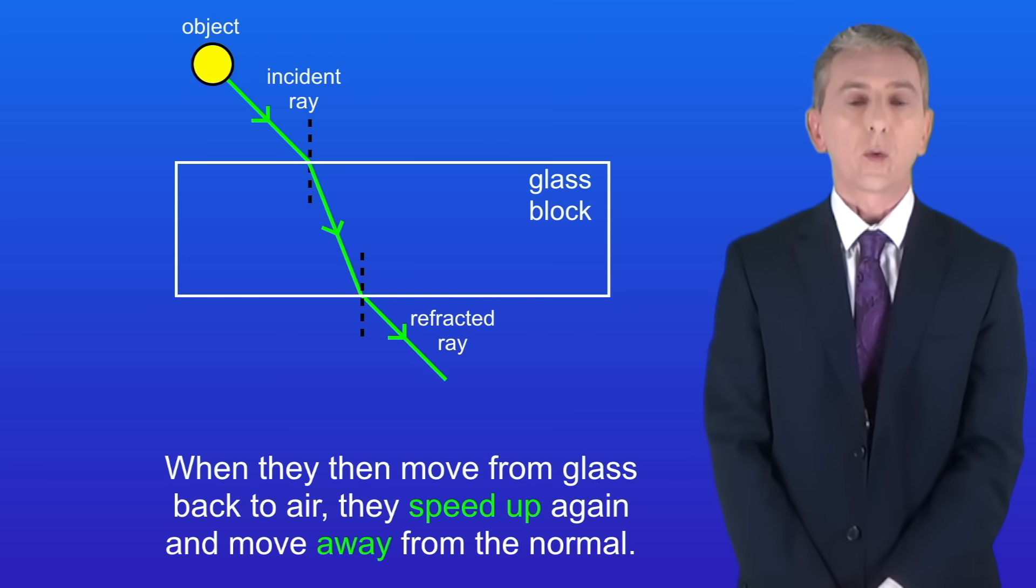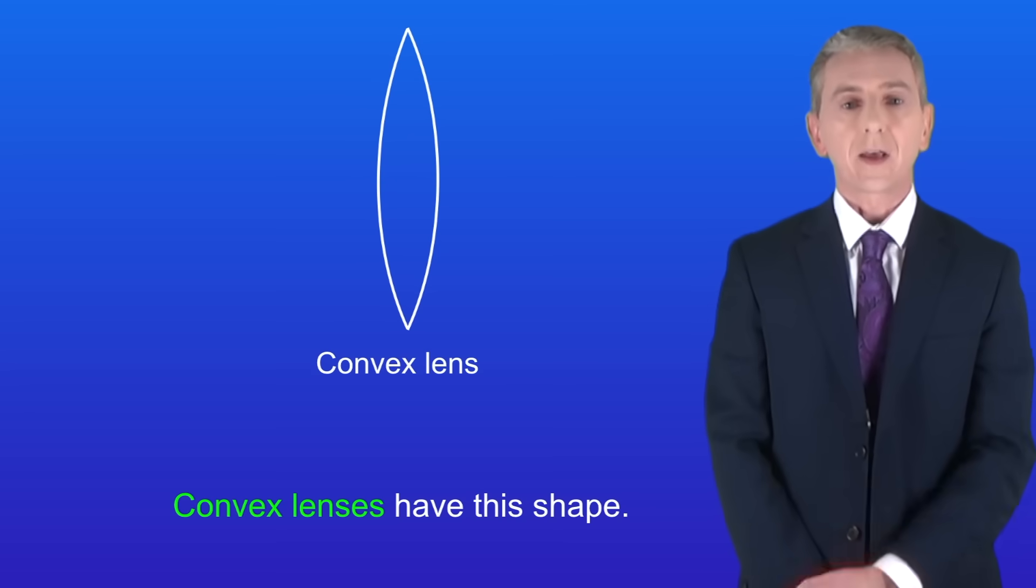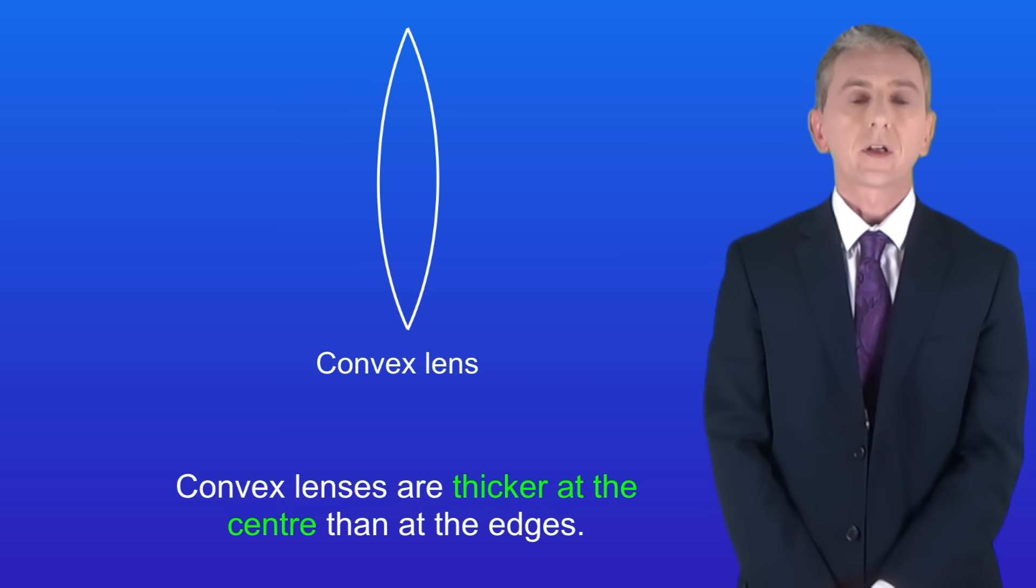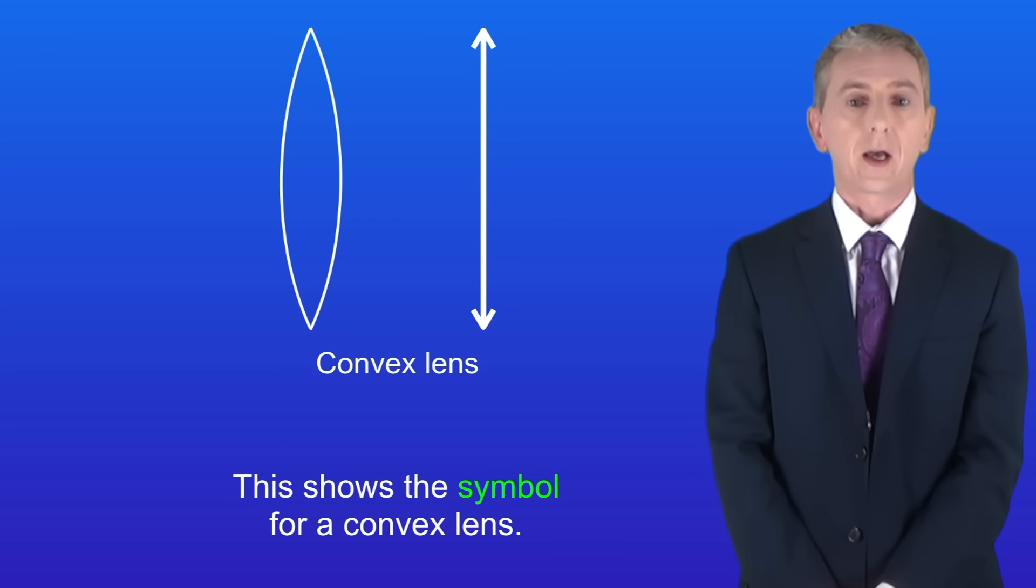So in this video we're looking at convex lenses. Convex lenses have this shape. As you can see convex lenses are thicker at the center than at the edges. I'm showing you here the symbol for a convex lens and it's important that you learn this as you'll be seeing it a lot.